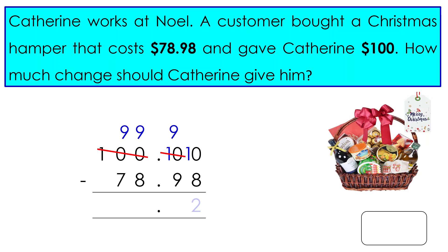10 minus 8 is 2. 9 minus 9 is 0. 9 dollars minus 8 dollars is 1 dollar. Finally, 9 tens minus 7 tens equals 2 tens. The final answer is $21.02.